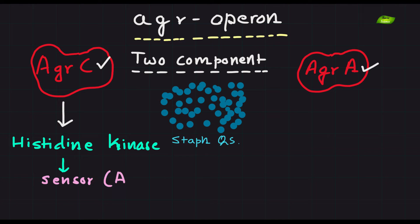AGRC, a transmembrane histidine kinase, functions as a sensor for extracellular AIPs.